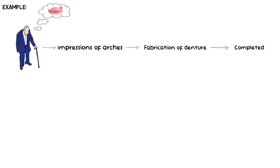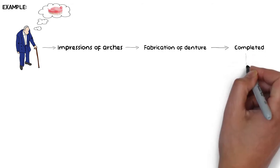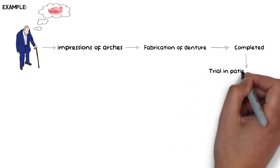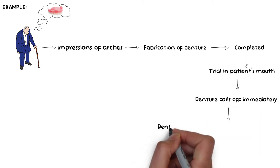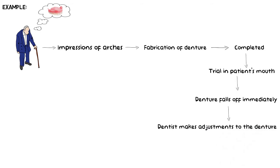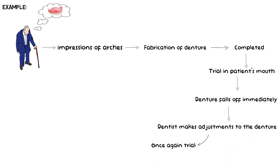After the fabrication of the maxillary denture is complete, the dentist tries to place it in the patient's mouth, but as soon as the maxillary denture is placed, it falls off immediately after retaining only for a brief moment. The dentist then makes some adjustments and tries to fix it once again in the patient's mouth. This time the denture does stay in its place, but as soon as the patient tries to speak, the denture falls off once again.